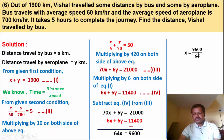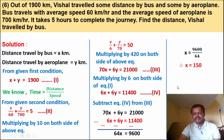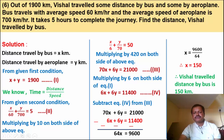So 64x equals 9600, therefore x is equal to 9600 upon 64, which gives x equal to 150. Therefore the distance travelled by bus is 150 km.